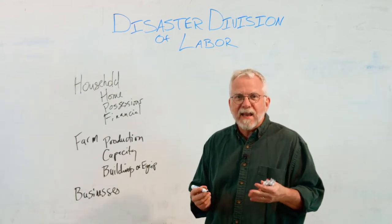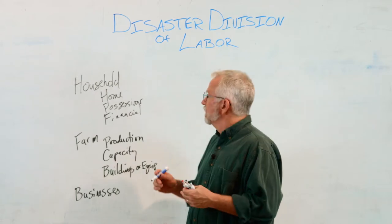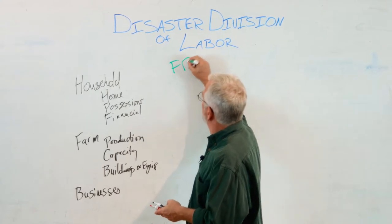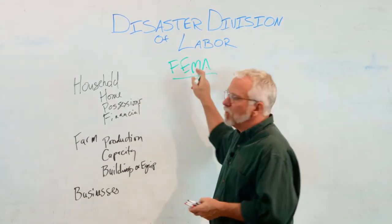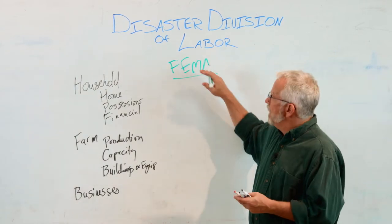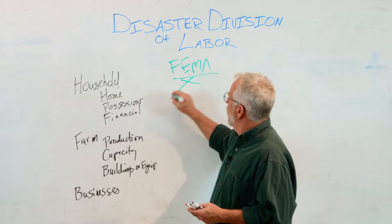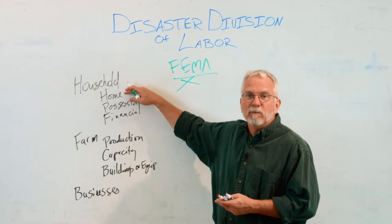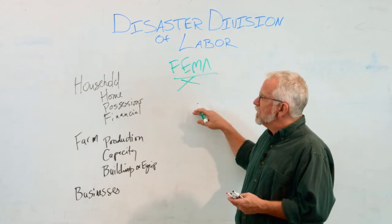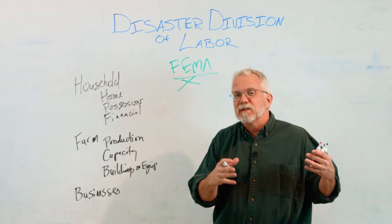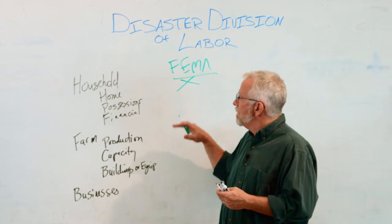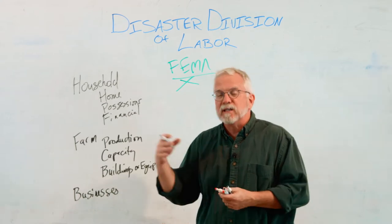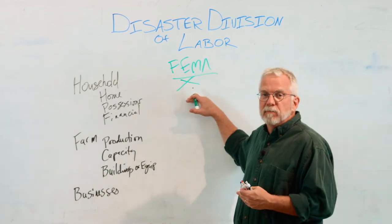There are basically three main agencies who work in disasters. The first one in is going to be FEMA, the Federal Emergency Management Agency. FEMA is only going to work on household losses, especially the possessions and the home. FEMA is only going to deal with things that are the possessions of the household. This is where we look at if someone doesn't have their medications, or needs food or other things — FEMA is the place to call.